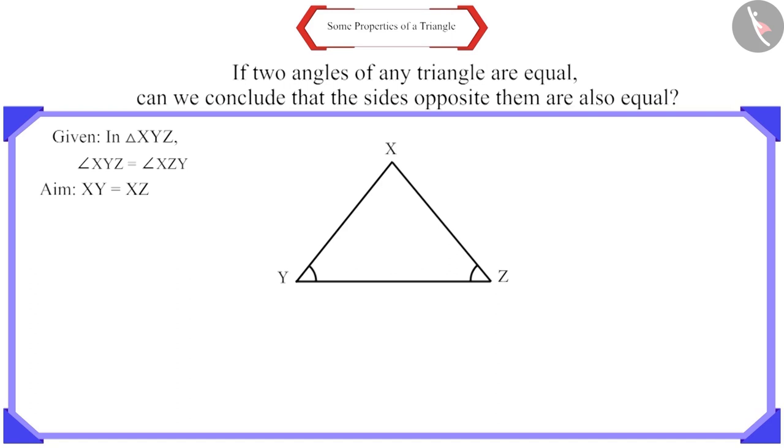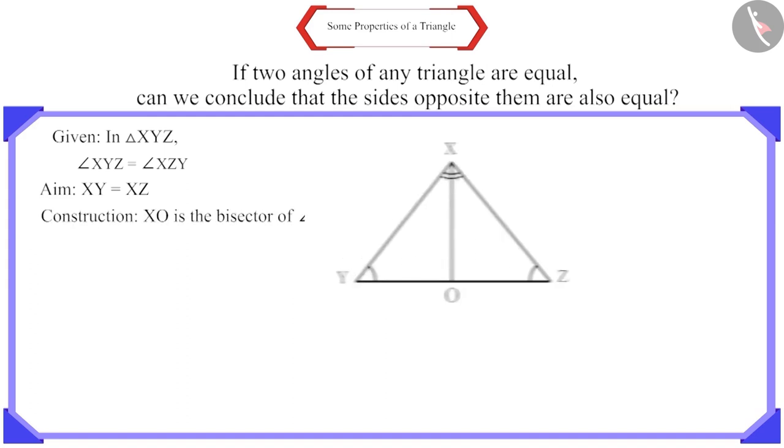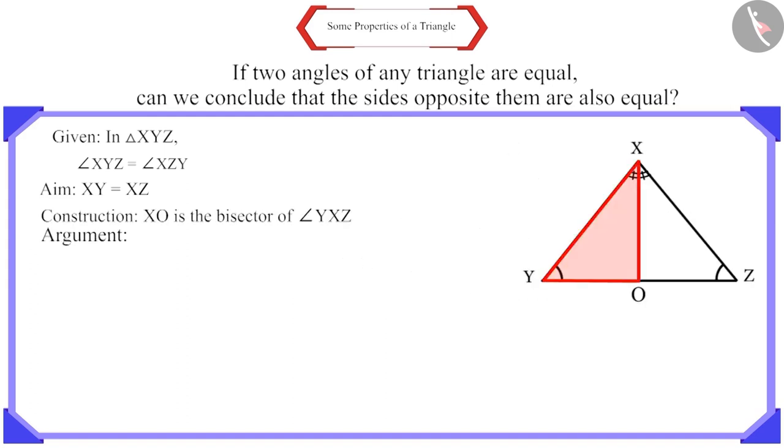Let's move ahead and prove this. Here, draw the bisector of angle YXZ and let it intersect YZ at O. Now, look at triangle XYO and triangle XZO. It's given that these two angles are equal. Here, we can write angle XYZ as XYO and angle XZY as XZO. Therefore, these will also be equal.